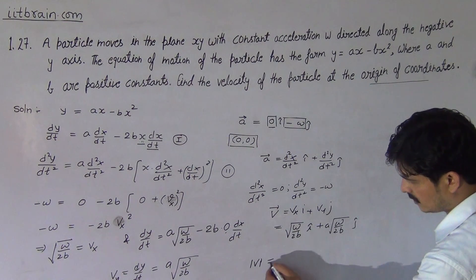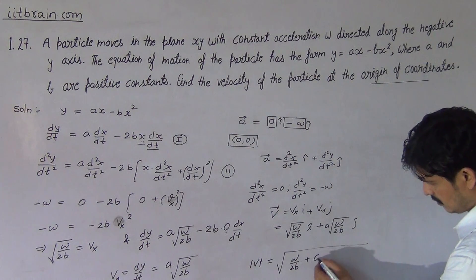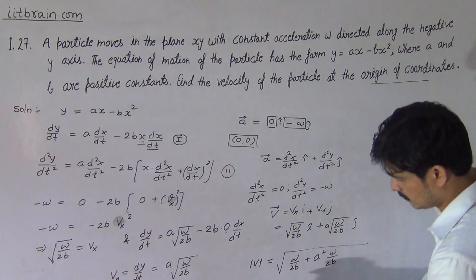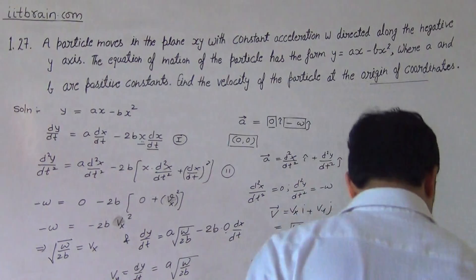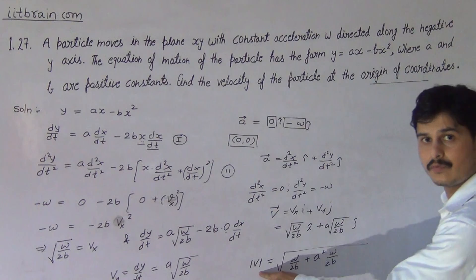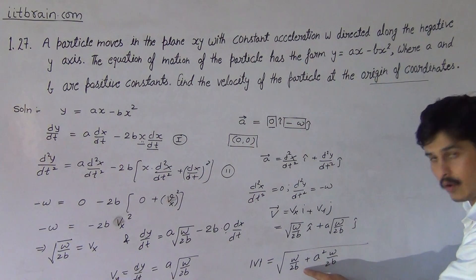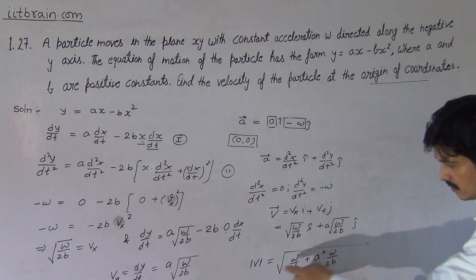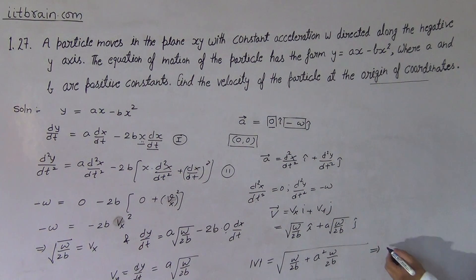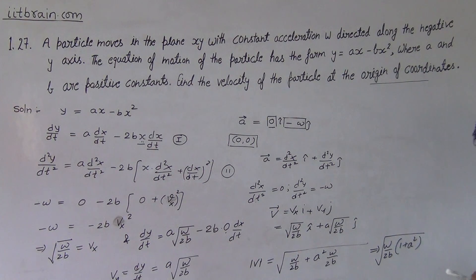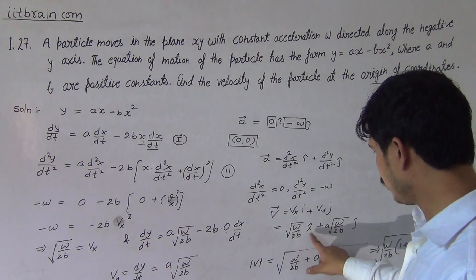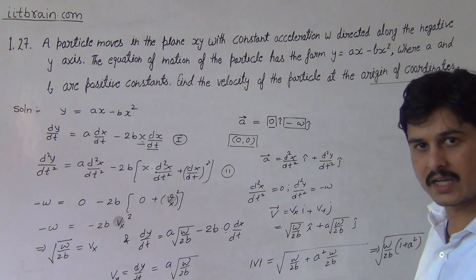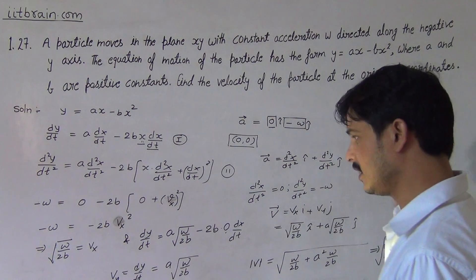To find the magnitude of the velocity vector, we take the square root of the sum of squares of the components: |v| = √[(ω/2b) + a²(ω/2b)] = √[(ω/2b)(1 + a²)] = √(ω/2b) · √(1 + a²). Therefore the velocity of the particle at the origin is v = √(ω/2b)î + a√(ω/2b)ĵ, with magnitude |v| = √[(1 + a²)(ω/2b)].